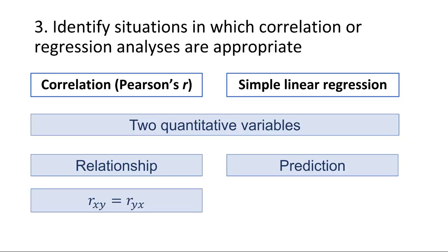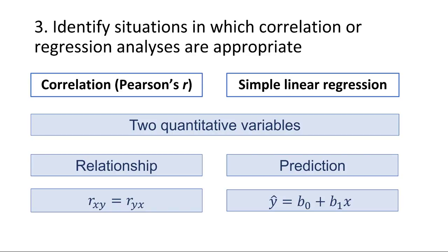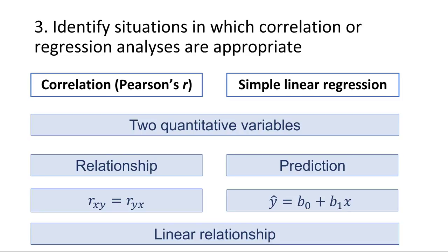With correlation, x and y are interchangeable — the correlation between x and y is the same as the correlation between y and x. We do not need to have an explanatory and response variable. In simple linear regression, we do need a designated explanatory and response variable. x is always the explanatory variable and y is always the response variable. If we flip x and y in regression, the y-intercept and slope would change. Both Pearson's r and simple linear regression assume a linear relationship.